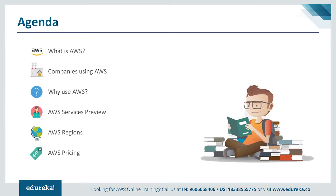We'll start this session by first discussing what is AWS, and then move on to discuss the different companies who are using the AWS service. Once we're done with that, we'll move on to discuss why companies big or small are using AWS or any other cloud provider. So once we've discussed what is AWS and why AWS is important, we'll look at some of the basic services that AWS has to offer, and then move on to discuss the AWS global infrastructure. We'll end the session by discussing the various pricing options provided by AWS.